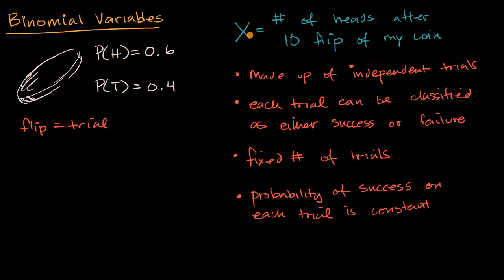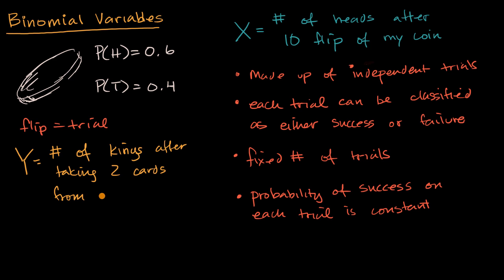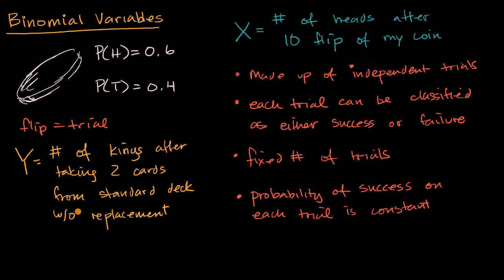Let's look at an example that is not a binomial variable. Define the variable y as the number of kings after taking two cards from a standard deck of cards without replacement. You might say this feels like it could be binomial: each trial can be classified as success or failure — drawing a king is a success, not drawing a king is a failure. And it has a fixed number of trials — two cards. But what about the other conditions?